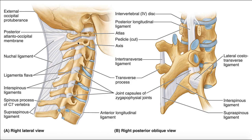Beneath that is the axis, or C2. The reason this is called the axis is it literally provides an axis about which the atlas can rotate. The joint between the atlas (C1) and the occipital condyles is called the atlanto-occipital joint. This joint allows several motions, which include flexion, extension, and lateral flexion, also called side bending. The joint between the atlas and the axis — C1 and C2 — is called the atlanto-axial joint. This joint allows for a little bit of flexion and extension as well, but mainly rotation. There's a huge rotational component at this atlanto-axial joint.